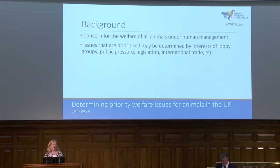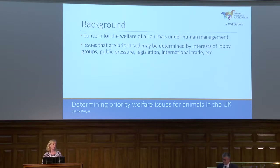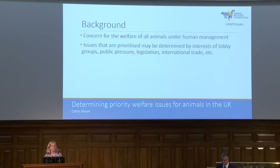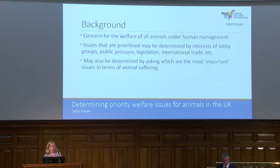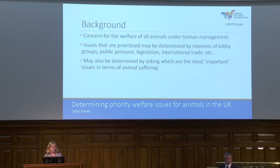There are many issues, and sometimes these issues are prioritised for various reasons — by the interests of particular lobby groups, public pressure, things that the consumer or the citizen is worried about, legislative changes, or international trade. But we can also prioritise by asking what are the most important issues in terms of animal suffering — what does it mean to the animal, rather than what it means to a consumer or the perception of other groups?